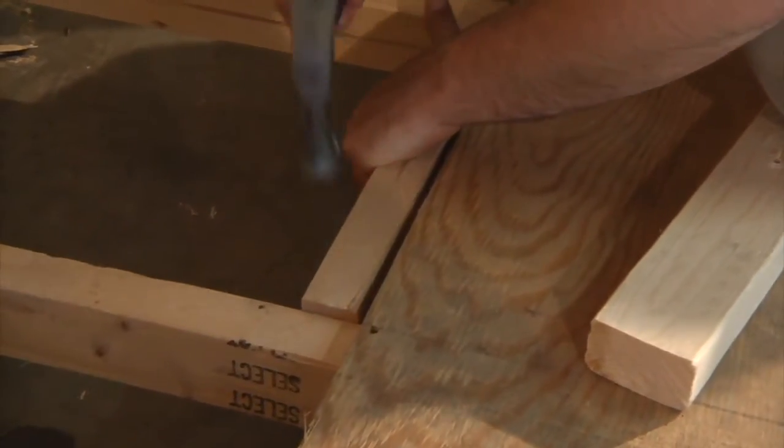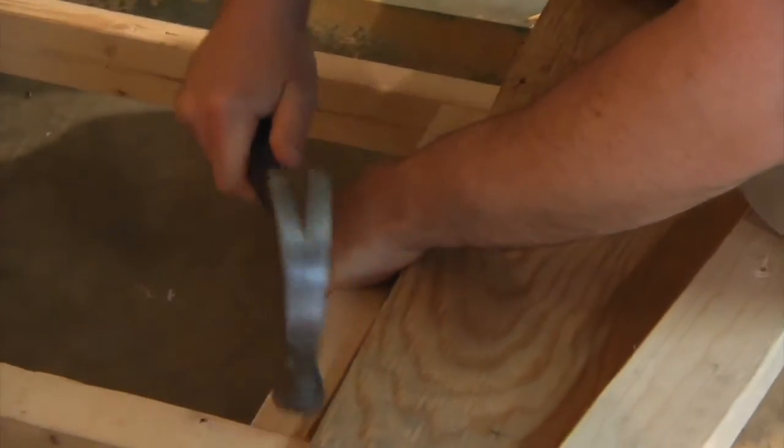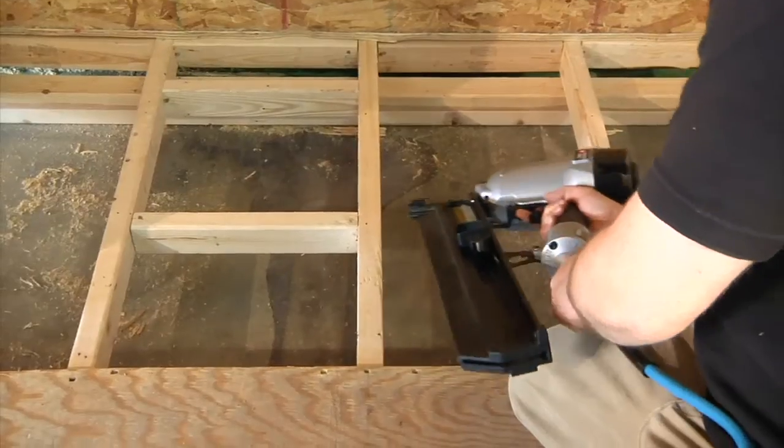You'll need to put blocking all around the perimeter of the pan for stability. The blocking goes halfway under the subfloor and halfway under where the pan will sit. Also, add blocks on either side of the drain.